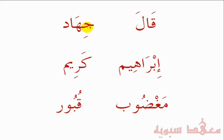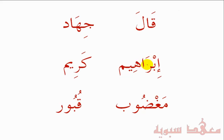The next word is 'Jihad'. We have 'Ji' as the first syllable and then 'haad' — 'Jihaad'. Notice here we have a Fathah on the Ha followed by the Alif, giving the elongation of the A sound. The next word is 'Ibrahim' — 'Ib-Raa' — notice the Ra has a Fathah followed by the Alif, so it's a long vowel: 'Ibraaa', not 'Ibra'.